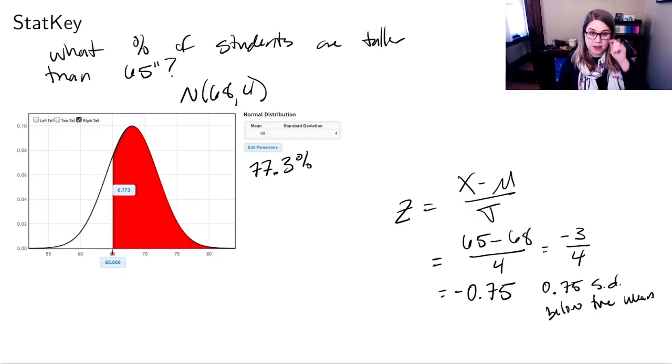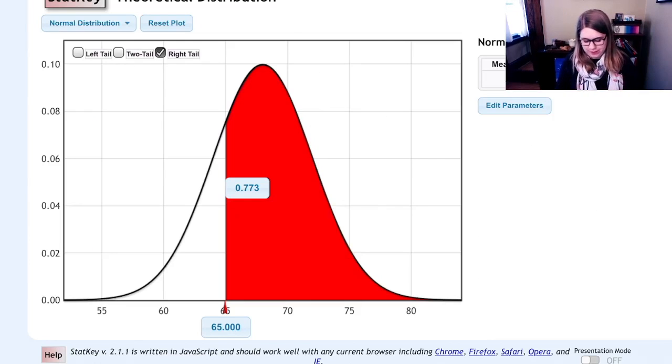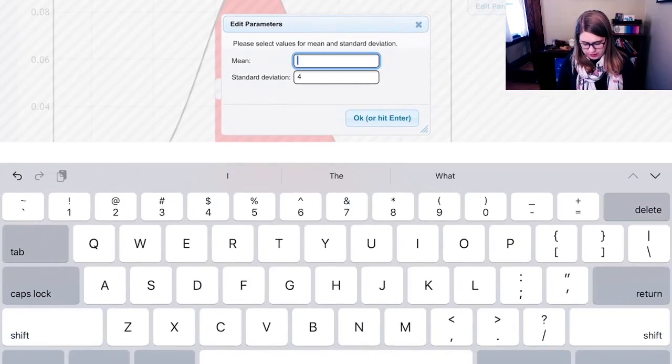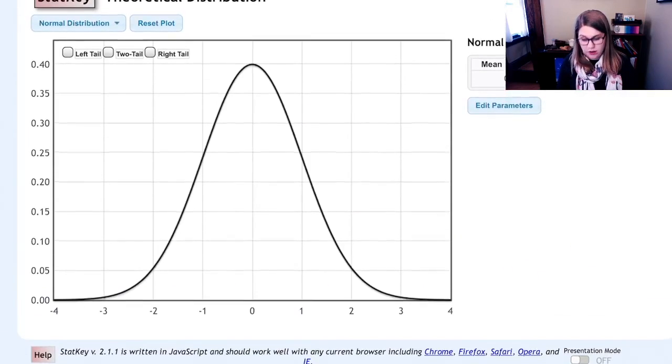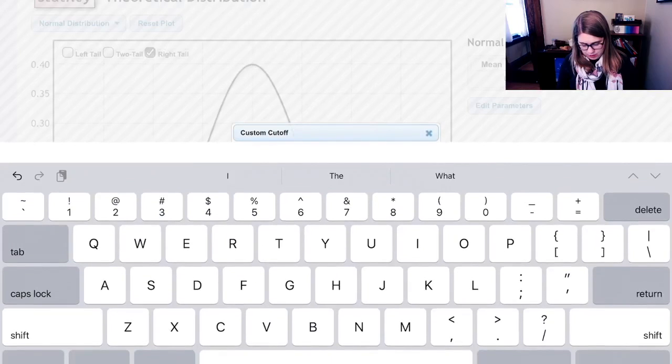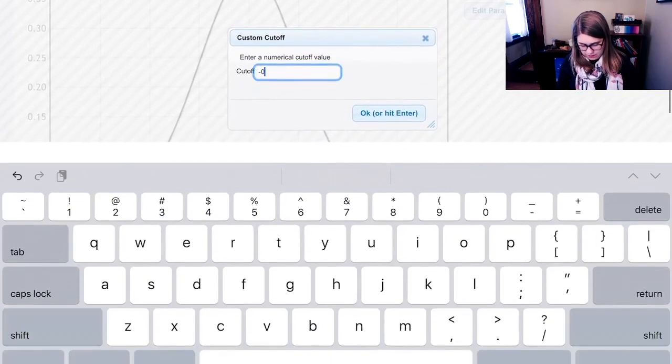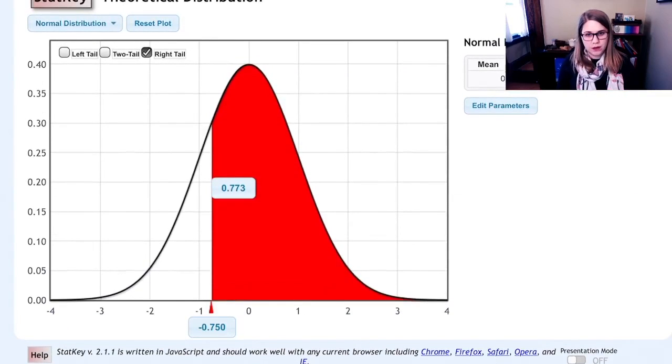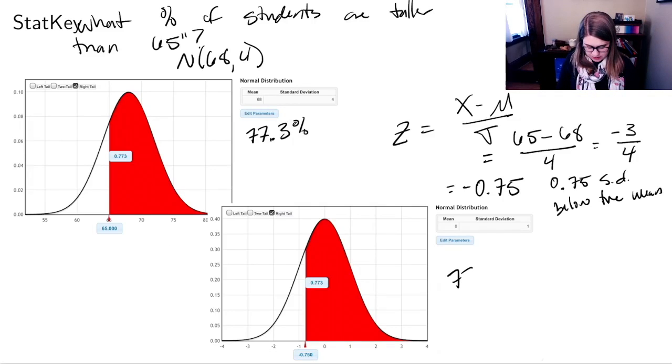Let's go to StatKey and try that out. I'm going to edit my parameters so that this is a standard normal. Mean 0, standard deviation 1. And then I'm going to do a right tail. But instead of putting in 65 inches, I'm going to put in negative 0.75. And I get the exact same answer. So I'll put that into my notes too. We got the exact same answer, 77.3%.